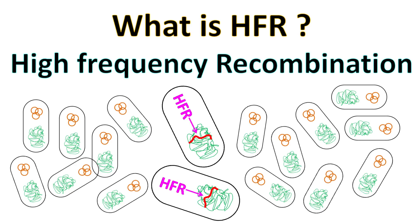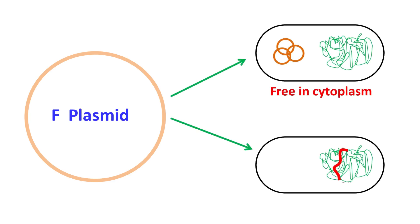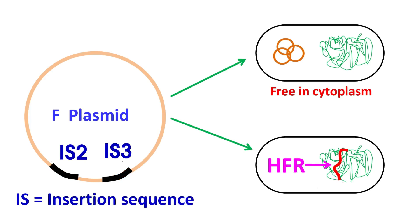Hey guys, cookbook chemistry basics here. Let's talk about HFR. The F-factor is a plasmid that can either be free or integrate itself with the host chromosome. The integrated F-factor is known as HFR. This integration occurs because of the presence of IS-2 and IS-3 sequences on the plasmid as well as on the chromosome.